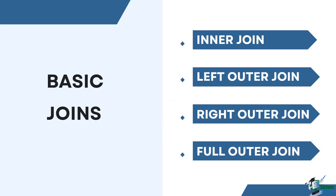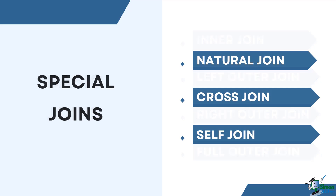PostgreSQL supports the basic types of joins, which are inner join, left outer join, right outer join, and full outer join. It also has special joins such as natural join, cross join, and self join.